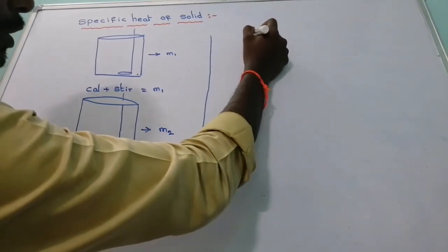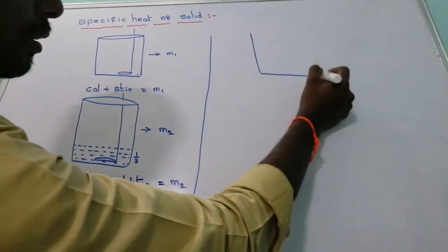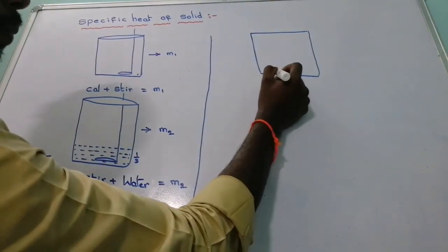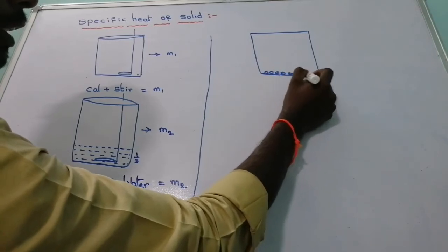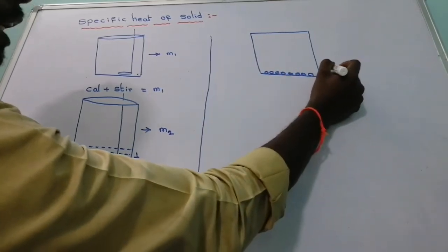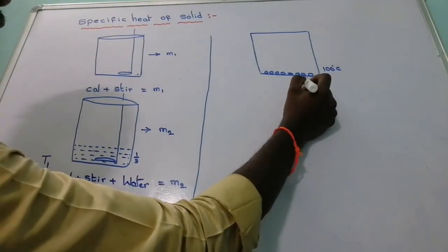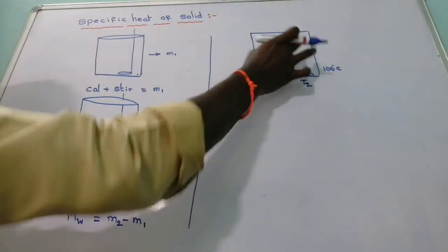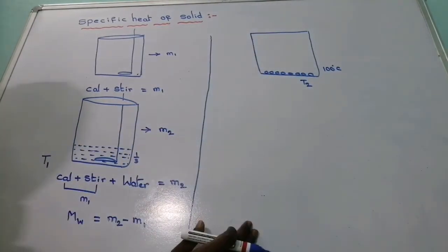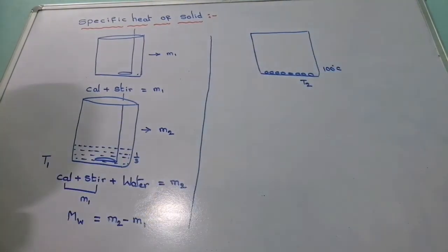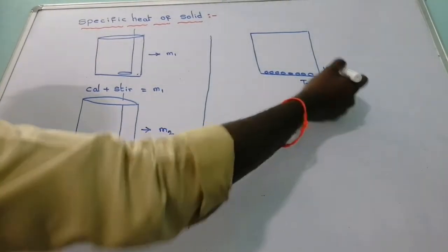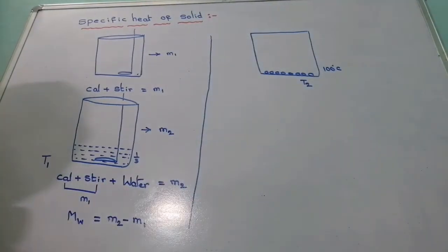Now consider another vessel — a steam heater. Place some lead shots into this steam heater and heat them up to 100 degrees Celsius. Consider the temperature of the lead shots at that instant as T2.